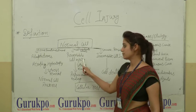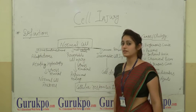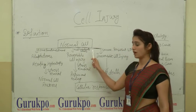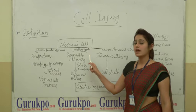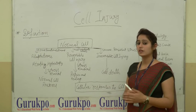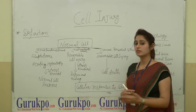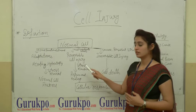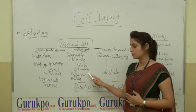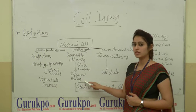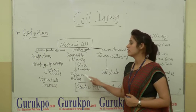Second, Reversible Cellular Injury. When the stress is mild to moderate, the cell may recover when the stress is removed, leading to recovery and healing of the cells.